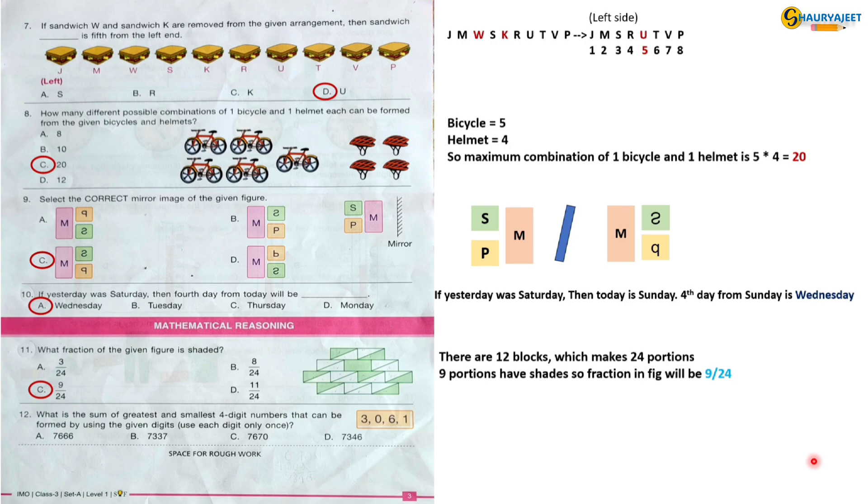Question 12: What is the sum of the greatest and smallest four-digit numbers that can be formed by using the given digits? Use digit only once. The possible greatest number will be 6310 and smallest number will be 1036. So 6310 plus 1036 is equal to 7346. So the correct option is option D, 7346.